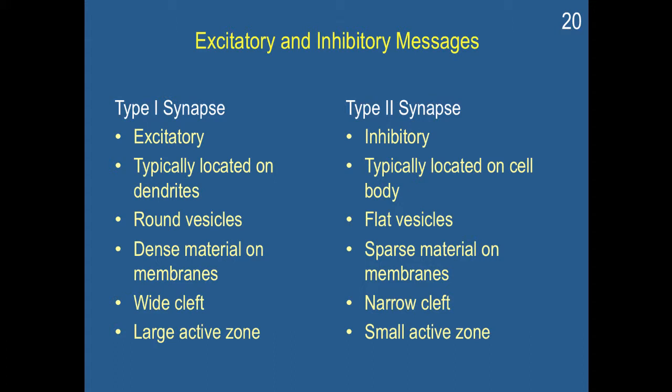Whereas the type one synapse is excitatory. It's typically located on the dendrites, and there are way more dendrites than the cell body. The vesicles are round, but you have dense material, you have wide clefts, and a large active zone. So you have a large area where neurotransmitters can pass to try to activate the post-synaptic cell.